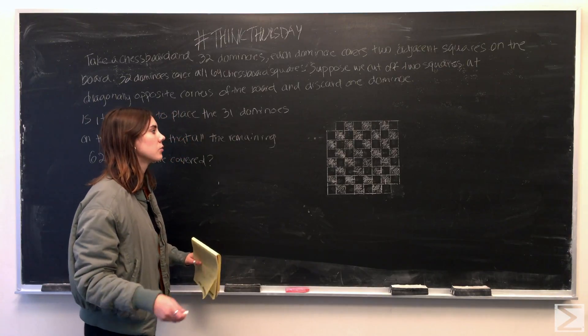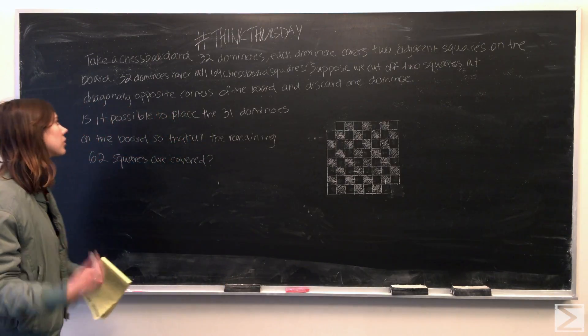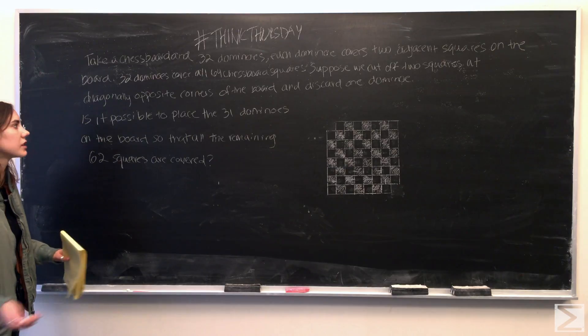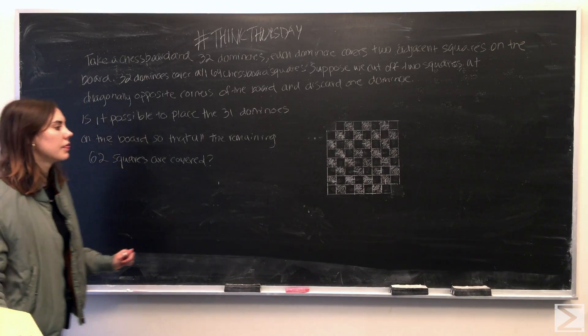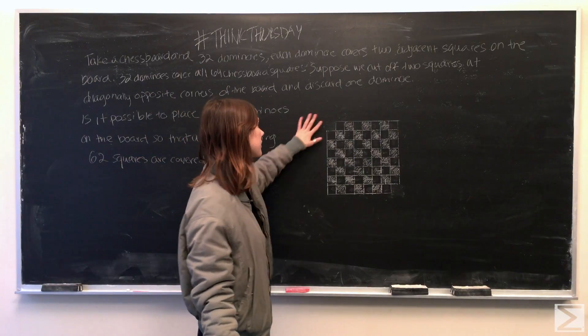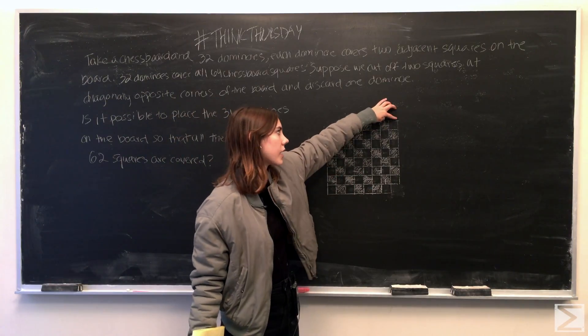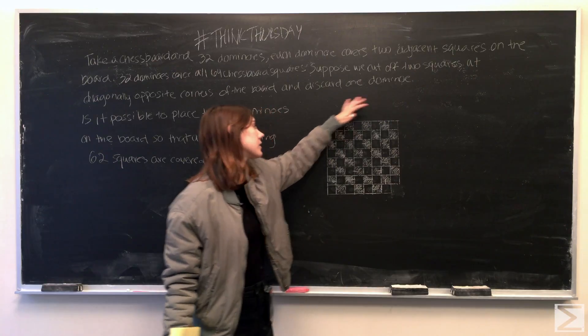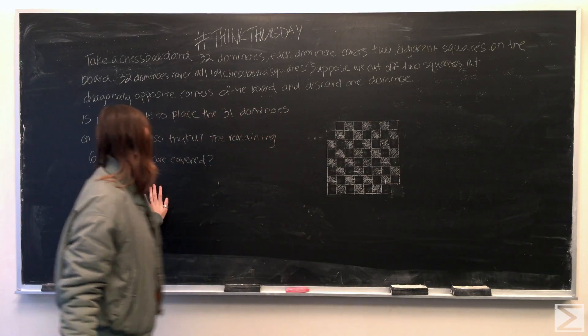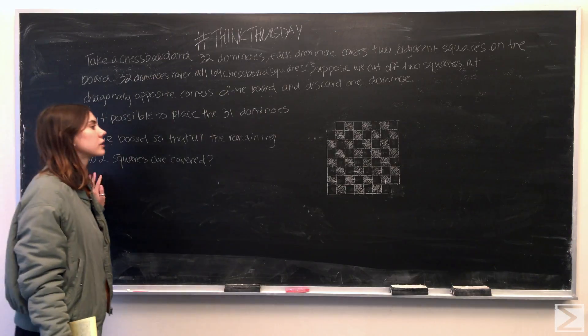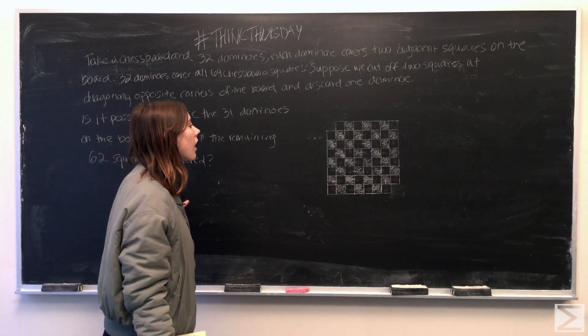So keeping that in mind, what you'll notice is that if you cross out the two squares from the original chess board across the diagonal, both squares are the same color. So here and here these squares were both white, and here and here these squares are both black. So what that means is that of the 62 remaining squares that we have to cover, there's actually two more squares of one color.